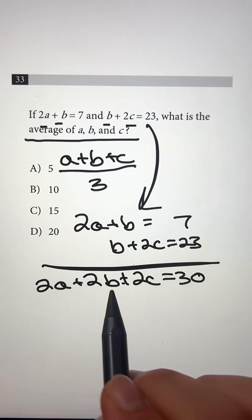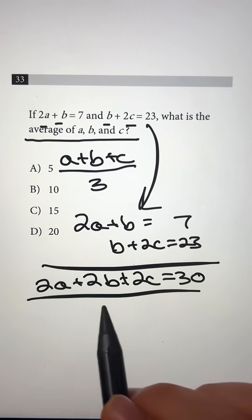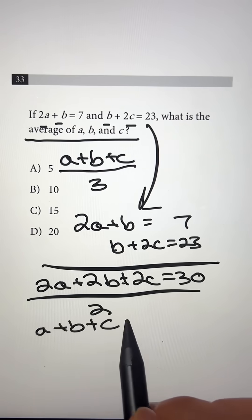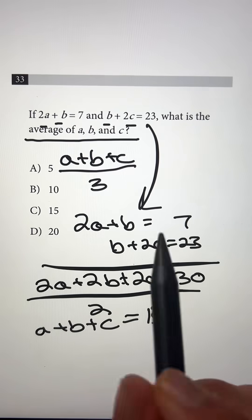And now we see a pattern. All of these are 2, 2, and 2. So if we just divide everything by 2, we get that a plus b plus c is going to give us 15.